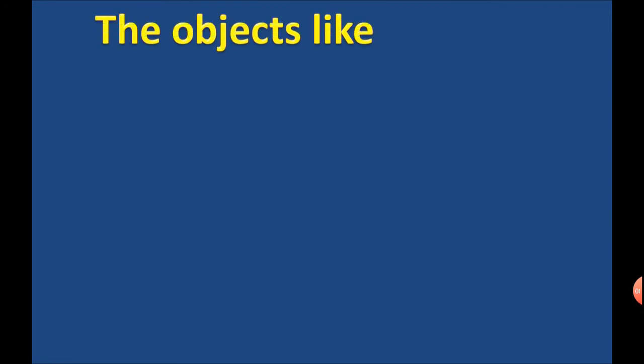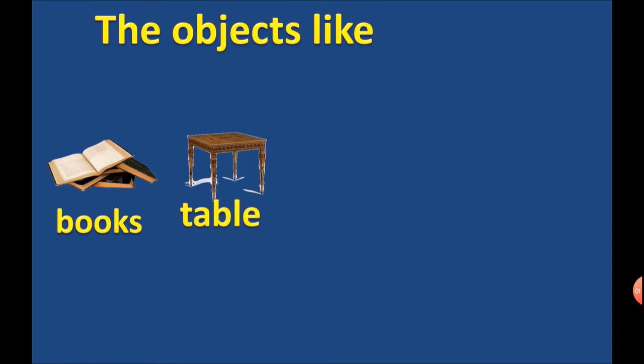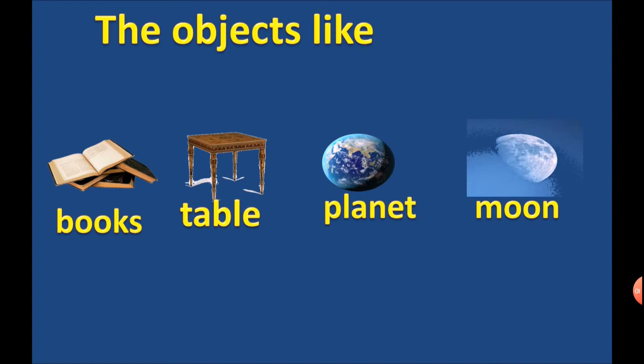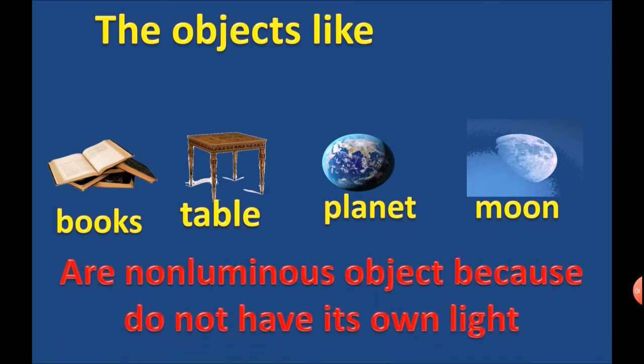The objects like books, table, planets, and moon are non-luminous objects because they do not have their own light.